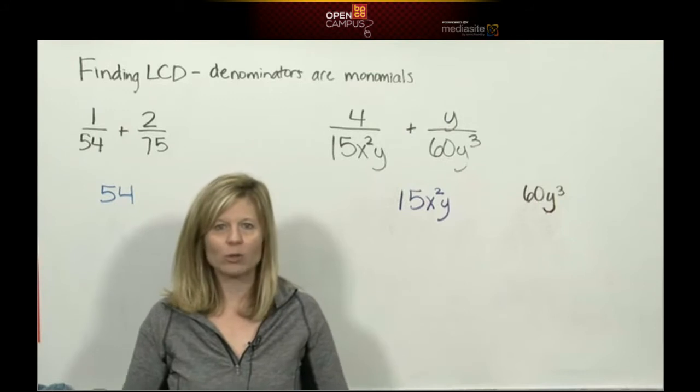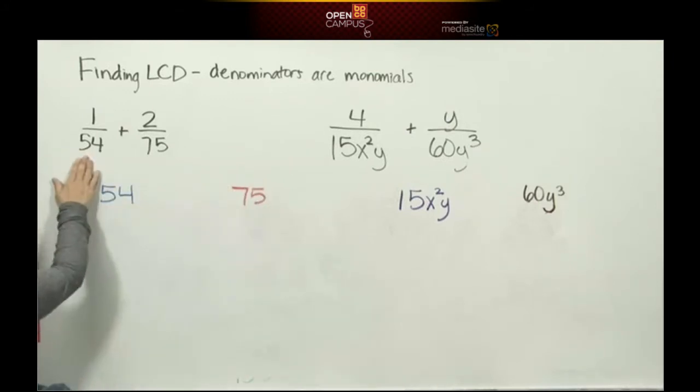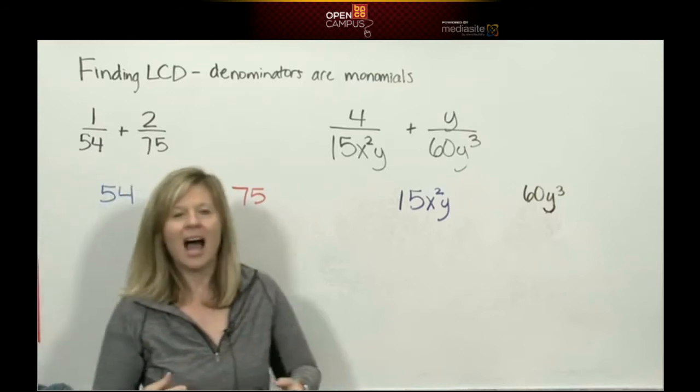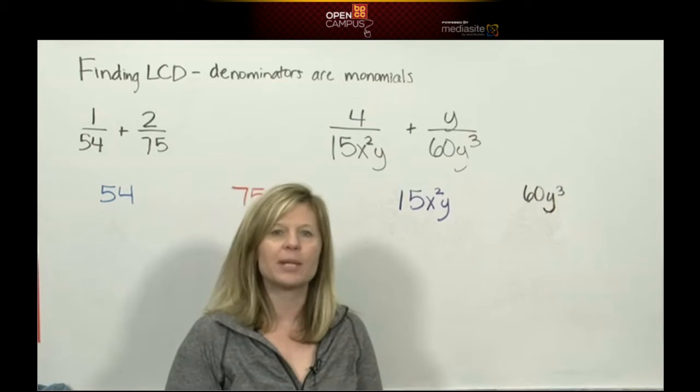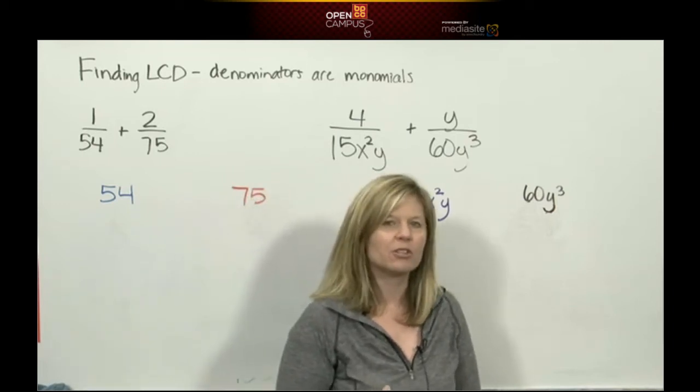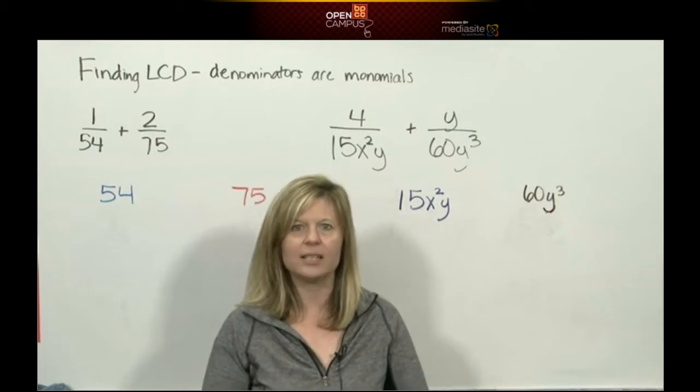Okay, let's practice the correct way to find a least common denominator. So suppose my denominators were 54 and 75. I know and you know you cannot figure that out in your head. You do not know the times tables for 54 or 75. Therefore, the correct method to find a least common denominator is to do a factor tree.